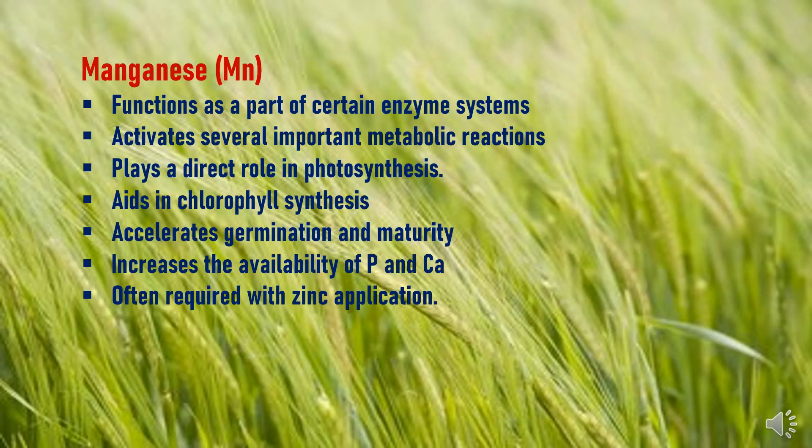Manganese functions as a part of certain enzyme systems. It activates several important metabolic reactions and plays a direct role in photosynthesis. Manganese also accelerates germination and maturity and increases the availability of phosphorus and calcium to the plant. Manganese is often required together with zinc application, because whenever zinc deficiency symptoms appear, they are correlated with manganese. So both manganese and zinc should be applied together to overcome the deficiency symptoms.